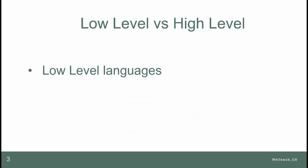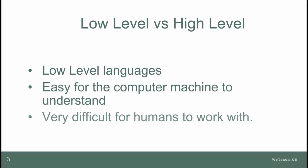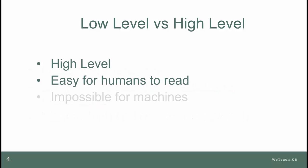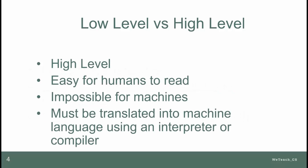The term low-level indicates a language easy for the computer to understand and execute, written in machine code or assembly. High-level indicates code that a human can easily understand, but that must be translated into machine language to be executed by the computer.